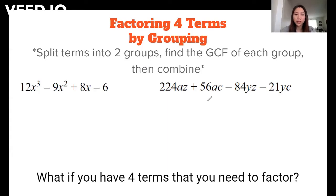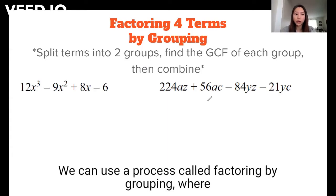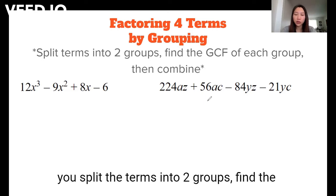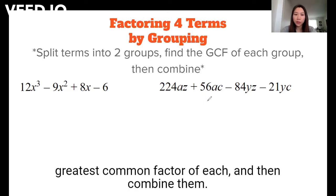What if you have four terms that you need to factor? We can use a process called factoring by grouping, where you split the terms into two groups, find the greatest common factor of each, and then combine them.